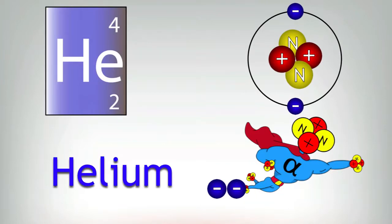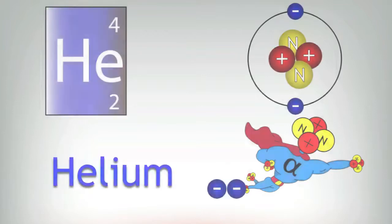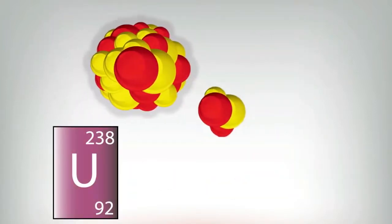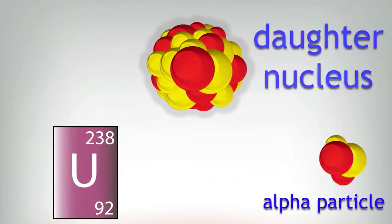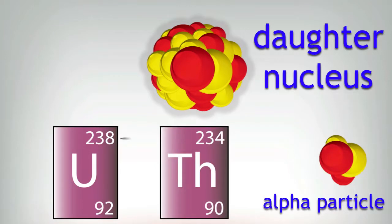So there you have it. An alpha particle is a helium nucleus waiting for two electrons. What about the nucleus it leaves behind? This nucleus is called the daughter nucleus. This has lost two protons and two neutrons. The newly formed daughter nucleus loses four in its mass number and two in its proton number.